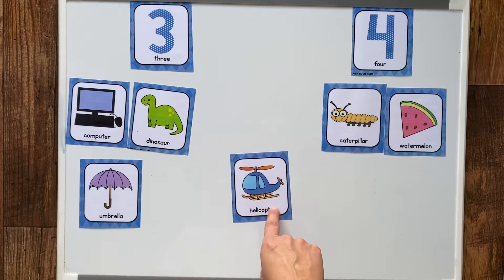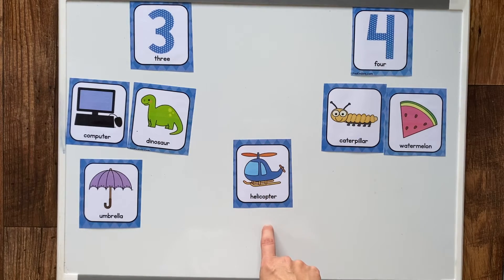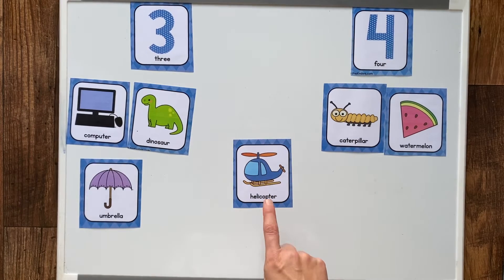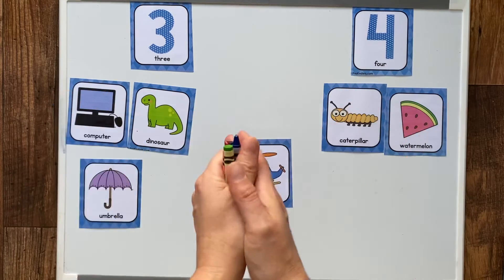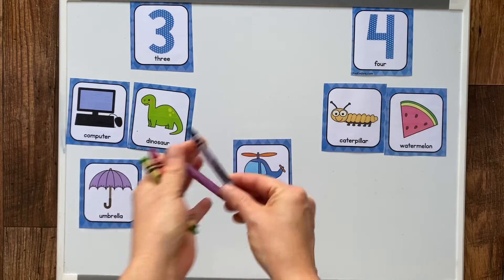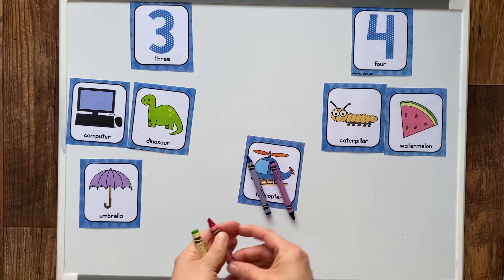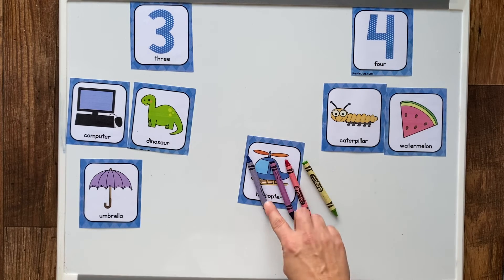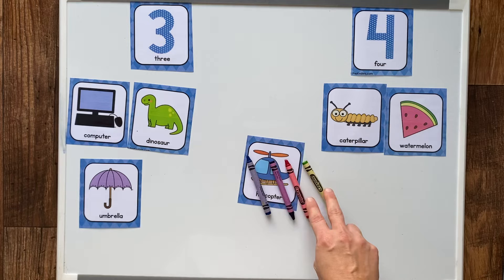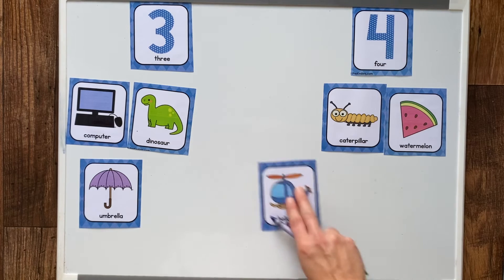Helicopter. Helicopter. Let's clap it — helicopter. Helicopter. Two and two makes four — four syllables.